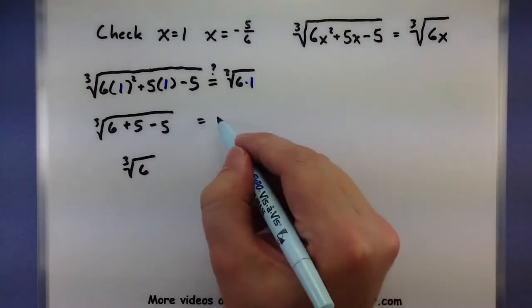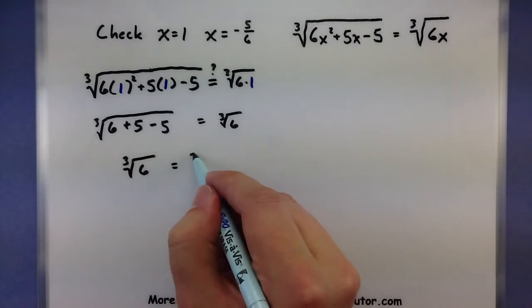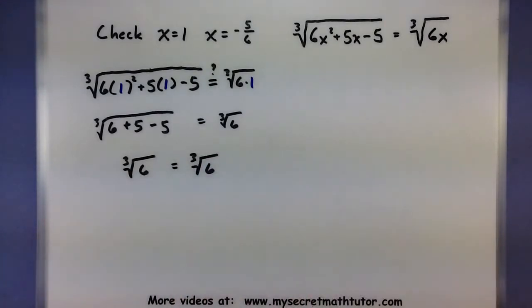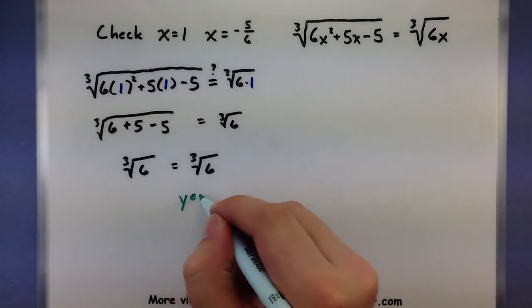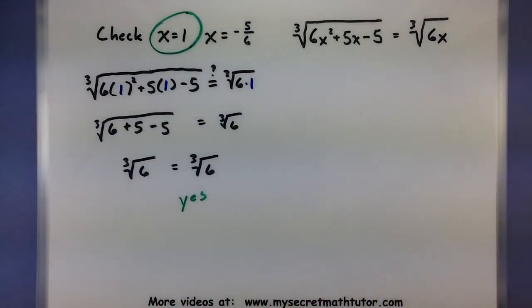All right, over here on the other side, 6 times 1 is 6. So cubed root of 6. Cubed root of 6. So we get exactly the same thing. So I know that x equals 1 is a solution.